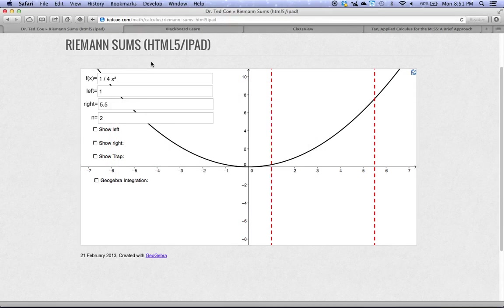So if you've clicked the link, you should see this page with these values already filled in. This is the Riemann sums GeoGebra applet. This one happens to be in HTML5, made for the iPad also, but it'll work on your computer fine.